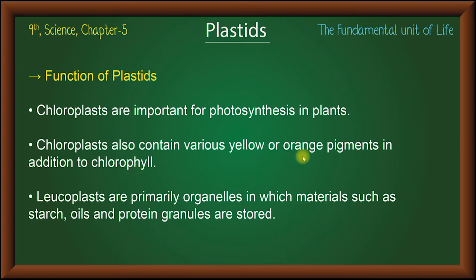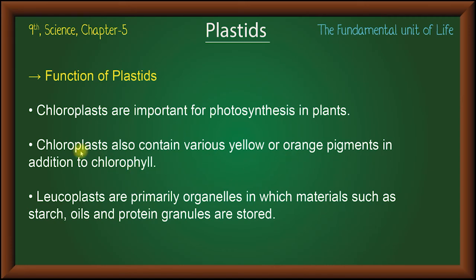There are yellow and orange pigments in chloroplasts. So chloroplasts contain the green chlorophyll pigment along with yellow and orange pigments, making them very colorful.